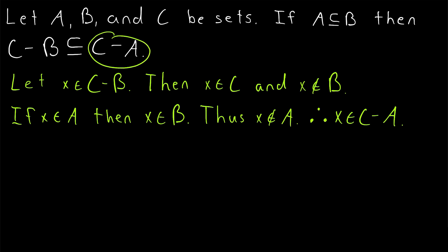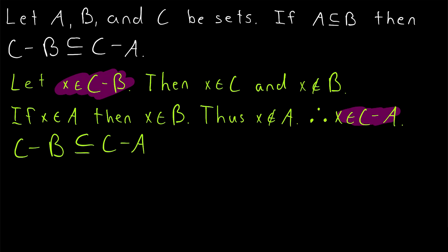C minus A contains all elements of C that are not elements of A. X falls in that category, and thus we have shown that C minus B is a subset of C minus A. That's because every element of C minus B is also in C minus A. And that's the proof. Pretty straightforward.